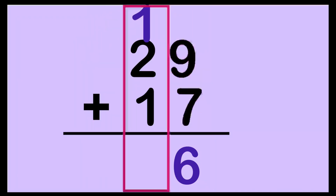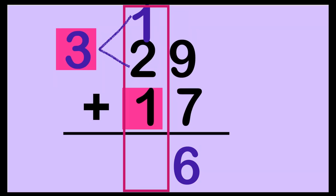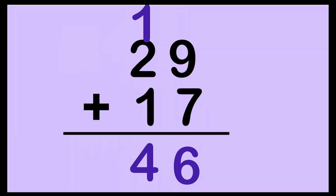So we can now add the ten's place. First, add 1 and 2: put 2 on your mind, big number — 2, 3. We have 3. Then 3 plus 1: put 3 on your mind — 3, 4. We have 4 here. So the sum of 29 and 17 is 46.